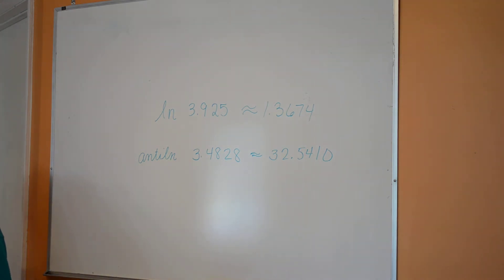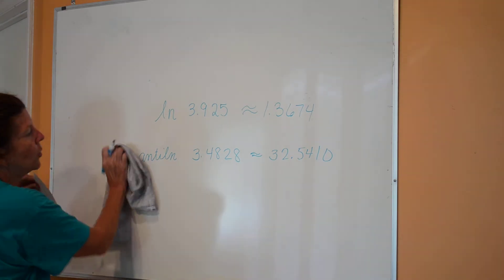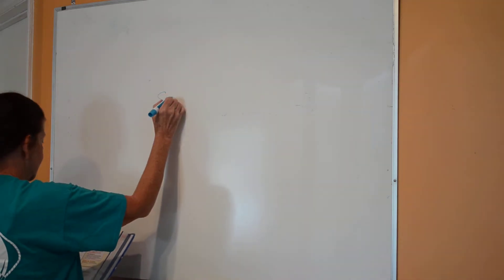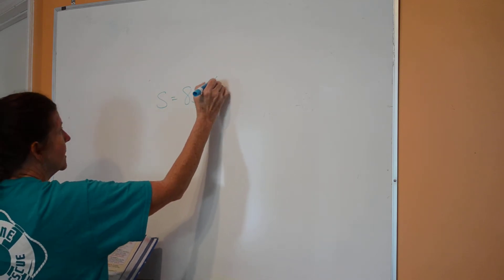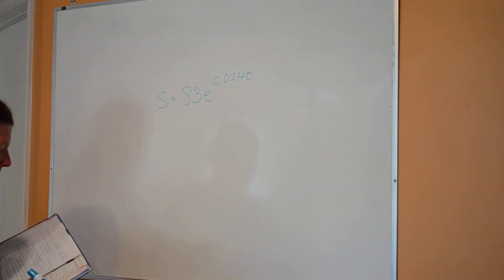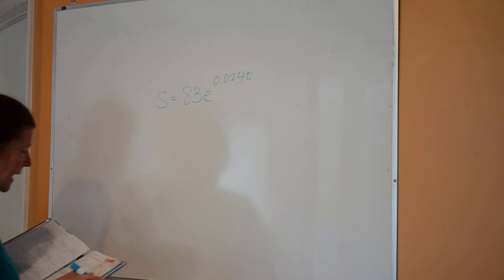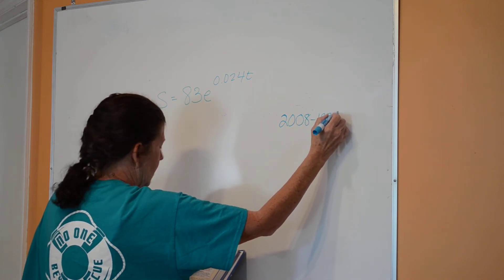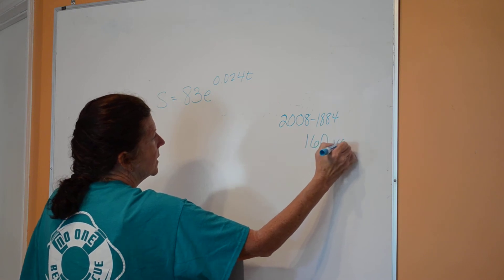The natural log is often used in formulas. There's an example on page 623 in your book, example number three. It says use the formula s equals 83e to the 0.024t power and the natural logarithm to determine about how many different US postage stamps will have been issued from 1884 to 2008. Well, that's going to be your time. So 2008 minus 1884 is going to give me approximately 160 years.